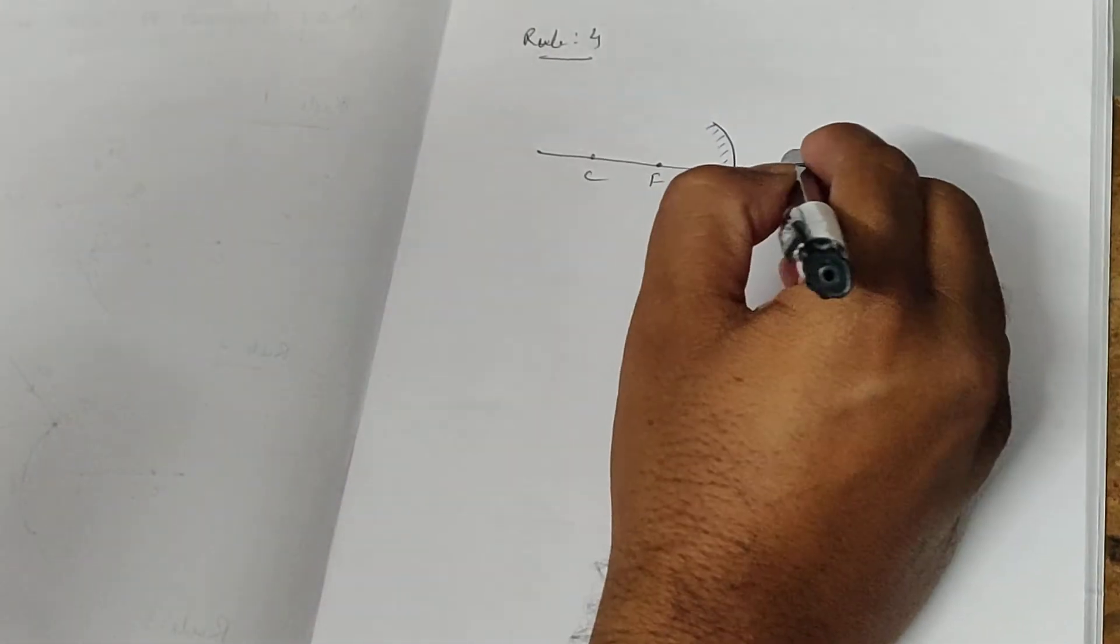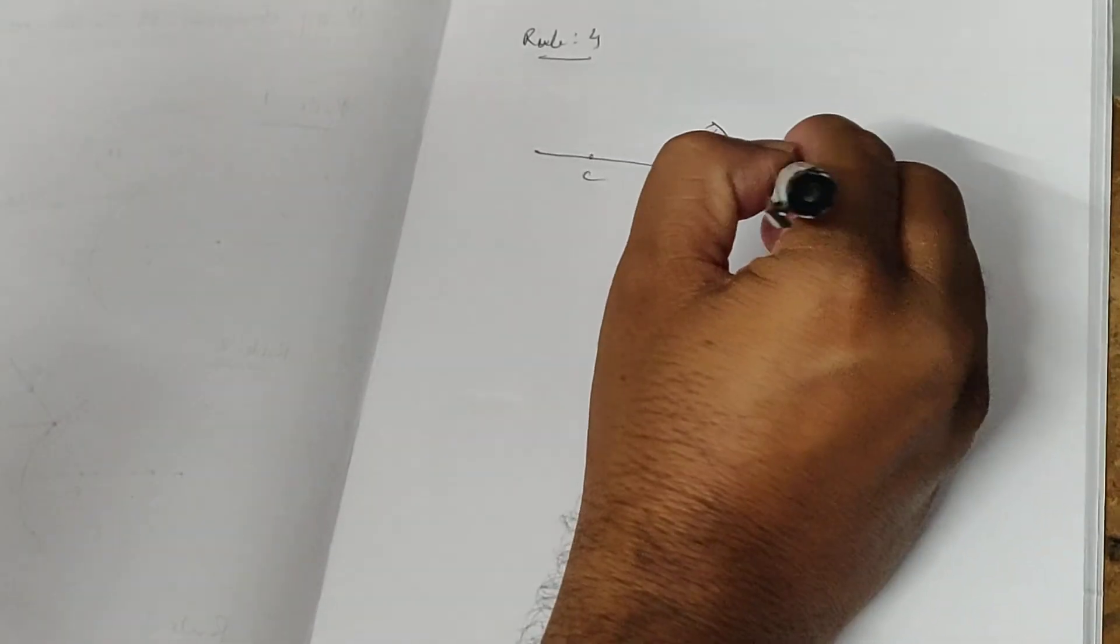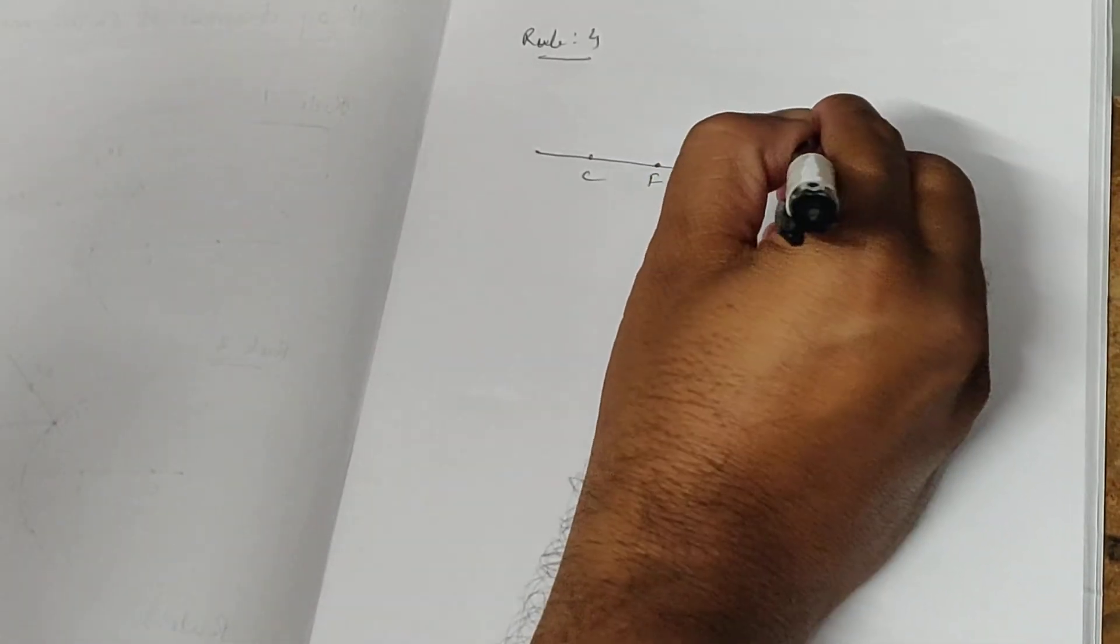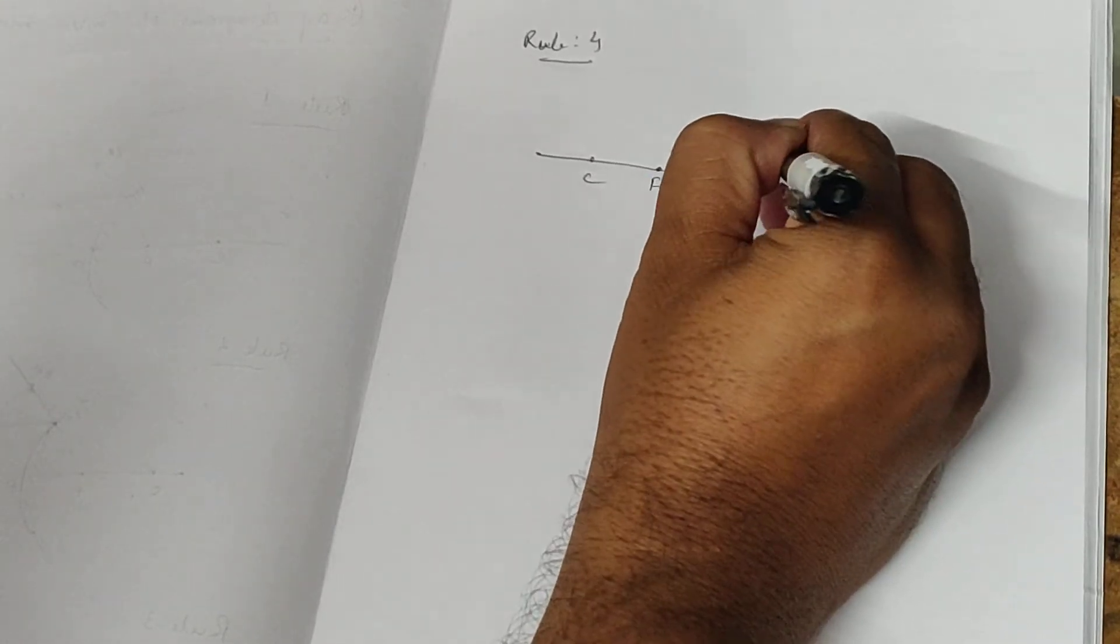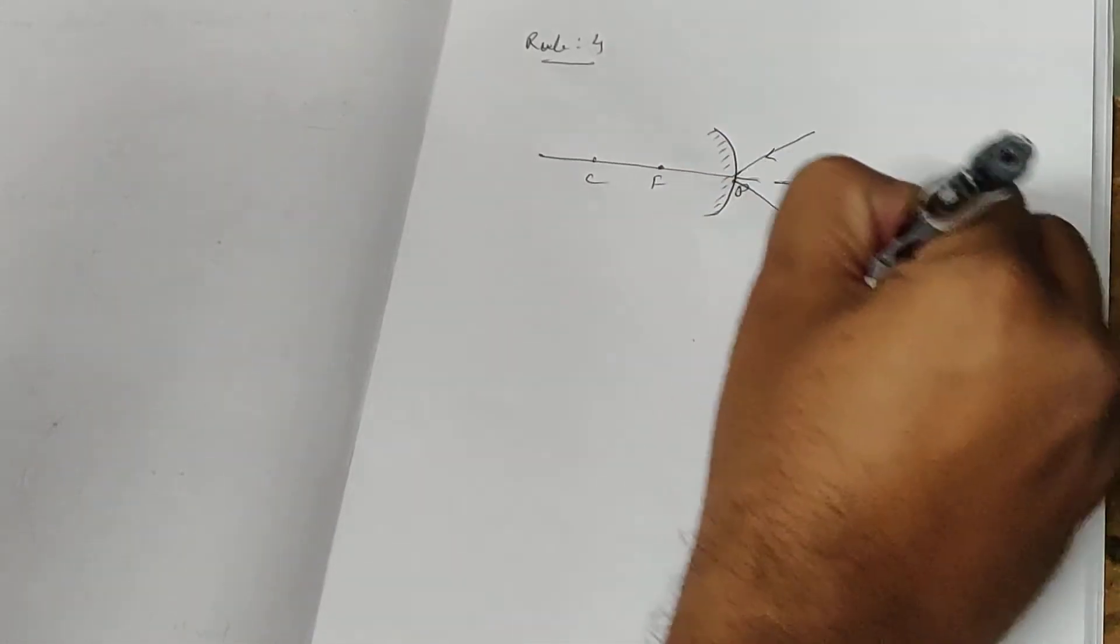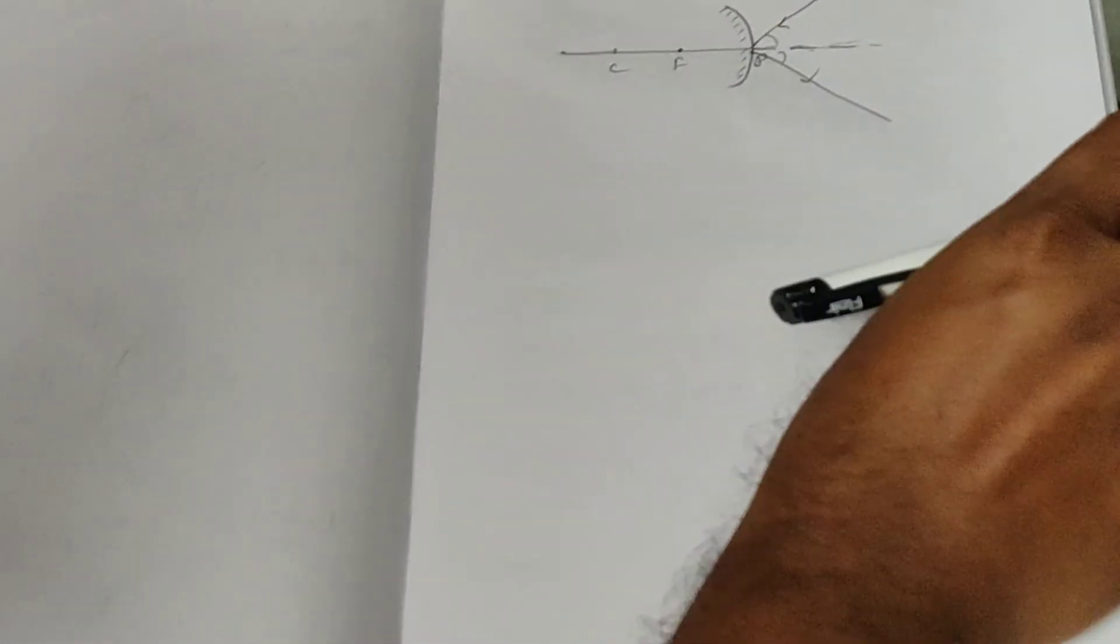Rule 4 says that according to the law of reflection, if a light ray is incident on the mirror with some angle, it reflects back in another direction at the same angle, following the law of reflection.